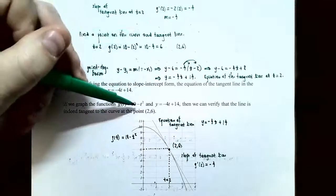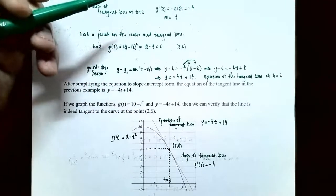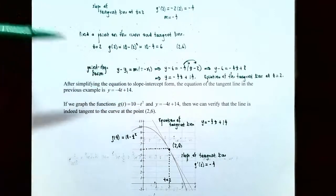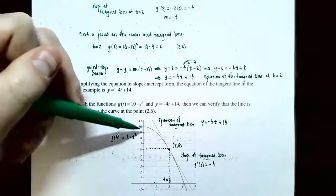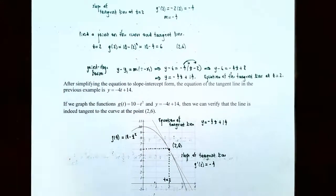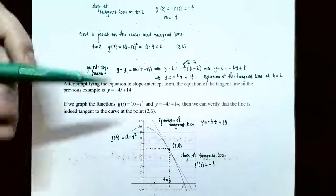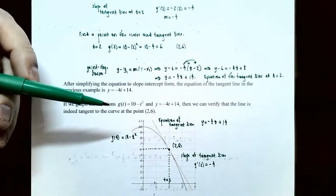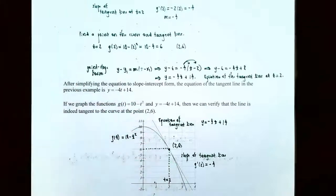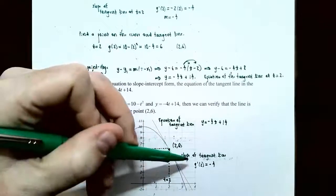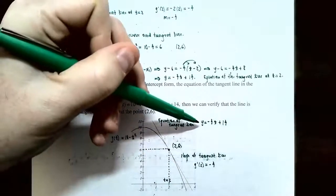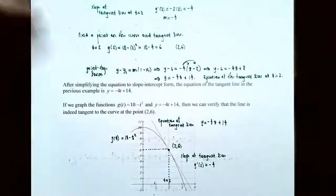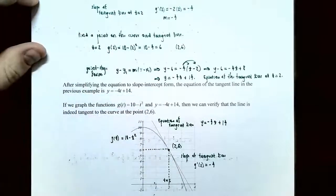Graphically, g of t equals 10 minus t squared is a downward-opening parabola because the leading coefficient of t squared is negative. If we graph both the parabola and the tangent line y equals negative 4t plus 14, the tangent line just touches the curve at the point (2, 6). The slope of the tangent line is g prime of 2, which is negative 4, and the line crosses the y-axis at 14.